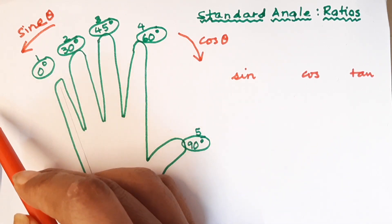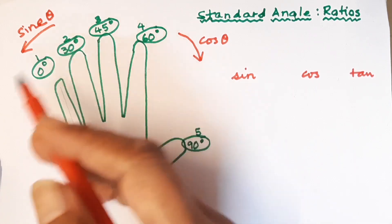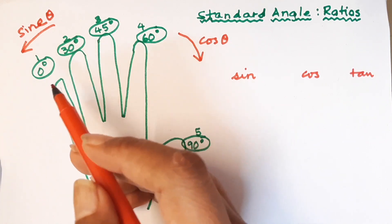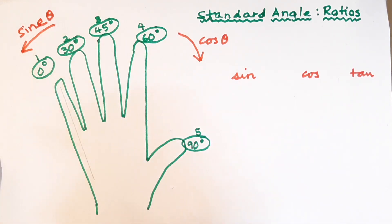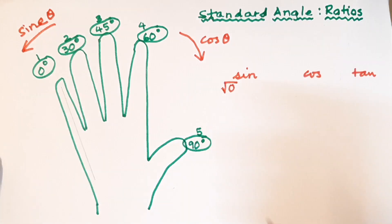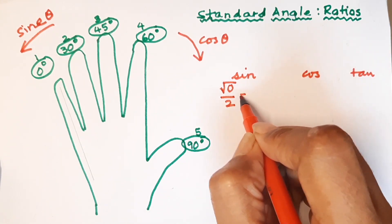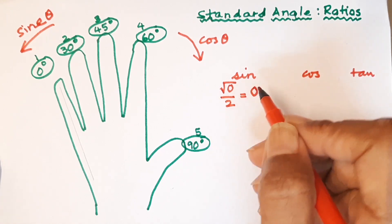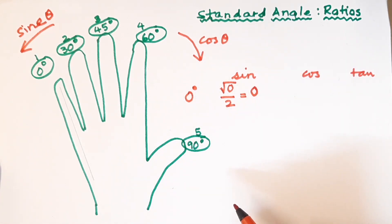Let us look at sine of zero degrees. I have marked this finger. For sine, we look at the fingers on the left-hand side, take the square root of that count, and divide by two. For zero degrees, there are no fingers on the left, so it will be zero. You take the square root of zero, which is zero, and divide by two.